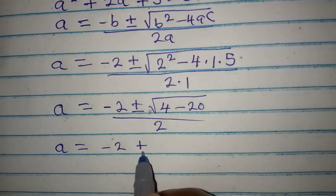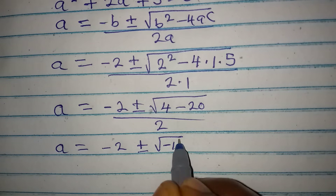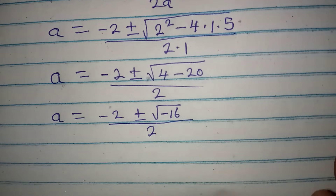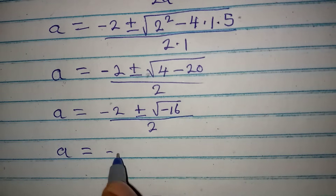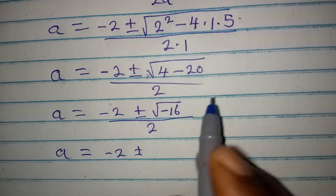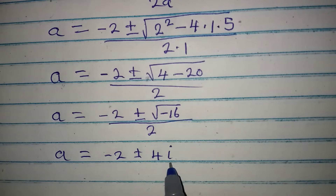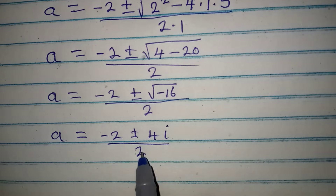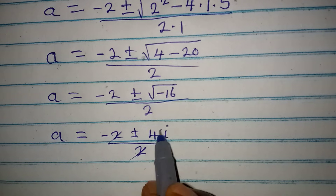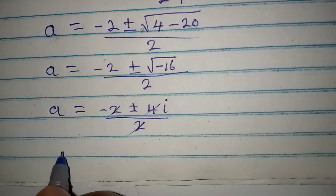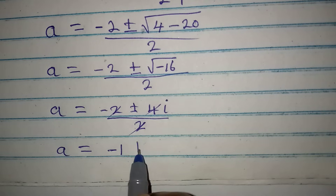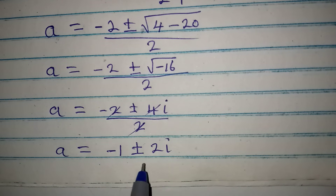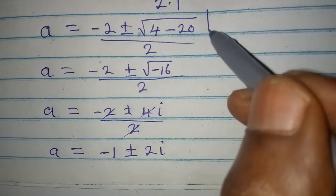So a = (-2 ± √-16) / 2. The square root of negative 16 gives 4i, where i is imaginary due to the negative. This gives a = (-2 ± 4i) / 2. Dividing both numerator terms by 2, we get a = -1 ± 2i.